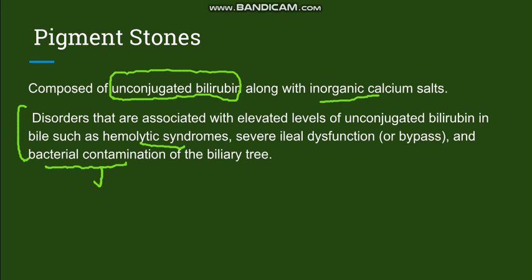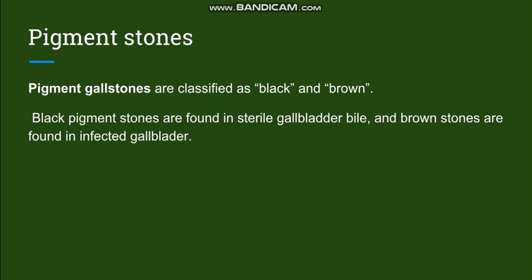Bacterial contamination of the biliary tree leads to formation of brown pigment stones, whereas hemolytic syndrome alone leads to formation of black pigment stones. Bacterial contamination with organisms like Clonorchis and Ascaris leads to formation of pigment stones. Black pigment stones are found in the sterile gallbladder, while brown pigment stones are found in the infected gallbladder.